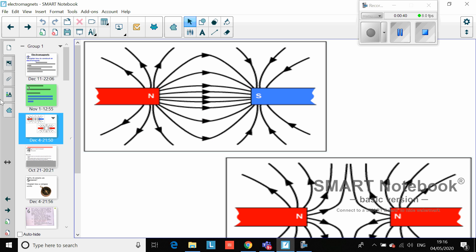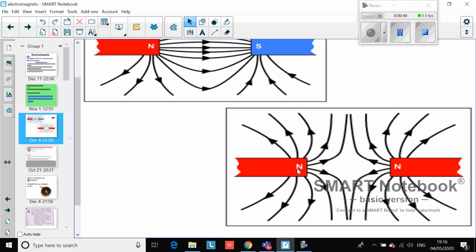Last lesson you learned that around a magnet there are magnetic fields. The reason they attract is because a north pole attracts a south pole. The reason they repel is if you put two north poles together, they'll push against each other.